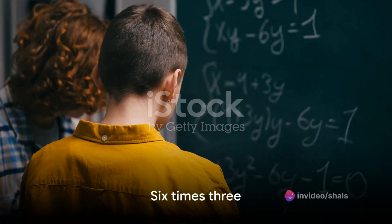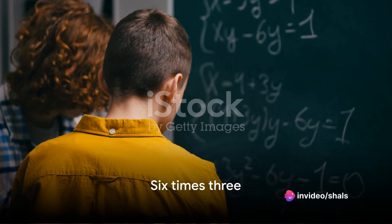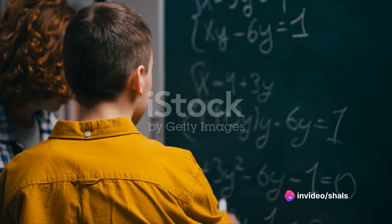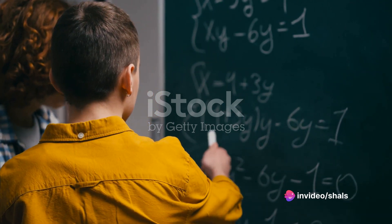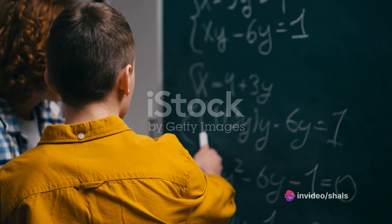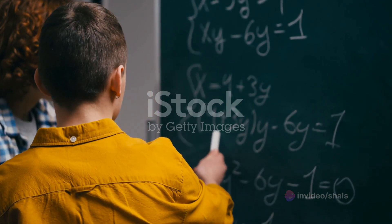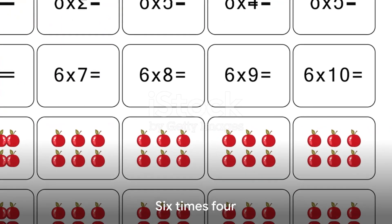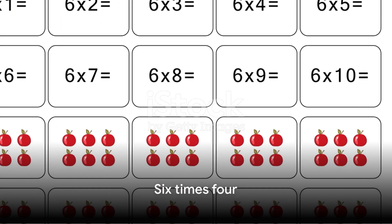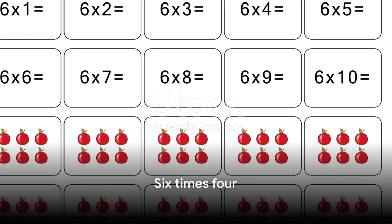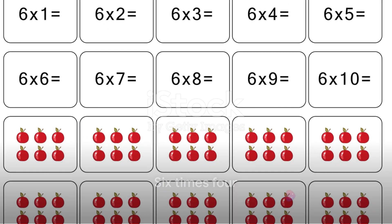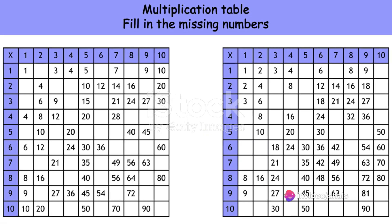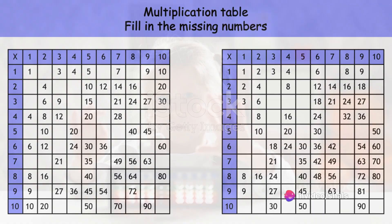Next, six times three equals eighteen. It's like having three bunches of six. If you were to count each item in the groups, you would find that there are eighteen in total. Now consider six times four — this equals twenty-four. It's as if you had four clusters of six. Counting all the items gives you twenty-four.